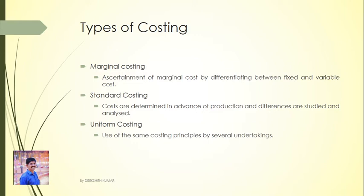The last type is Uniform costing. It refers to a situation where several undertakings use the same costing principles. If multiple undertakings adopt the same principles, that system of costing is called uniform costing.